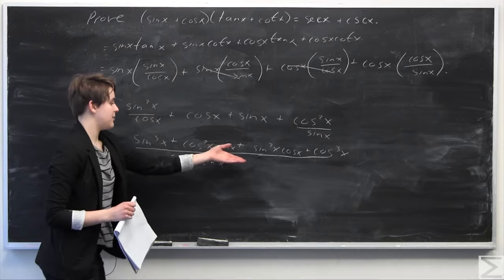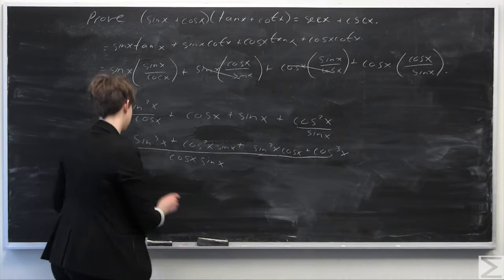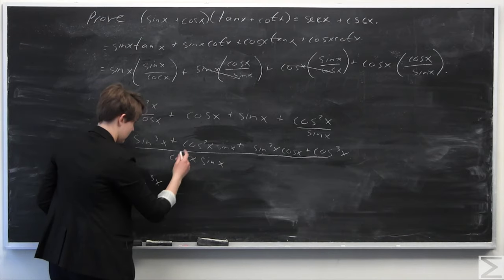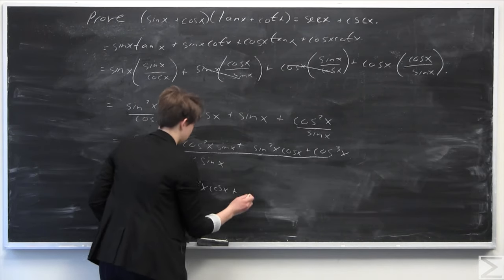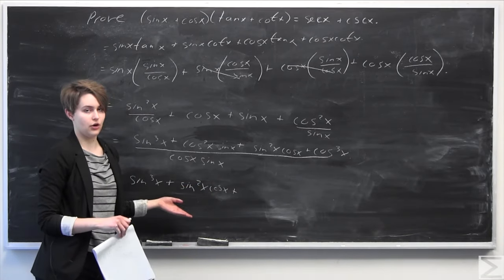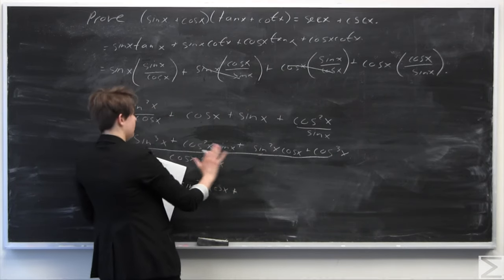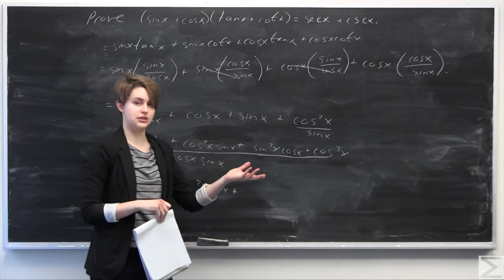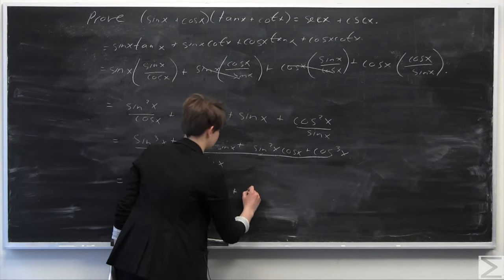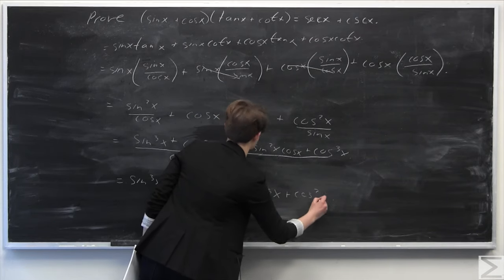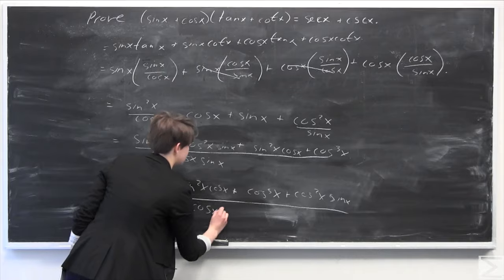It looks like we're going to have a factor by grouping situation here. I'm going to shift these terms around a little bit to make it more clear. I'm grouping the terms with the highest sine powers together and the terms with the highest cosine powers together, so that we can factor out sines and cosines respectively. This gives us: sine cubed of x plus sine squared of x times cosine x, plus cosine cubed of x plus cosine squared of x times sine of x, all over cosine of x times sine of x.